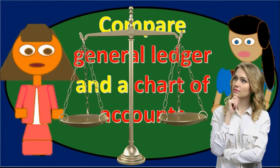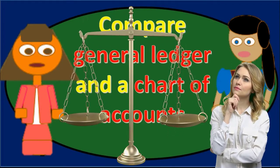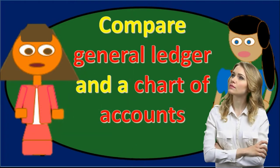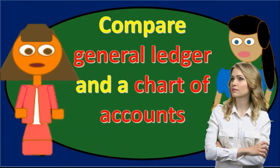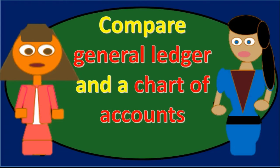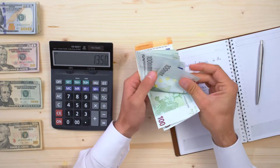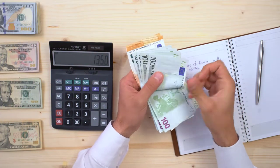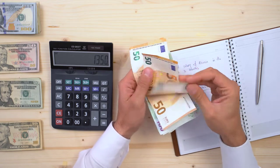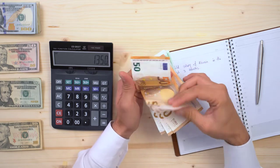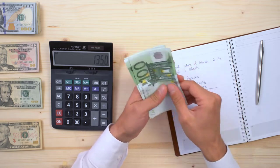If balances were included, we'd basically have a trial balance, which is something different. So the chart of accounts does not include balances — it's just a list of accounts. The main purpose of the chart of accounts is that we can use this list in order to help us record journal entries, constructing whatever journal entries we are making.